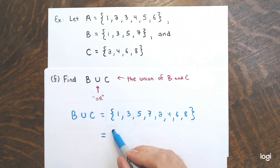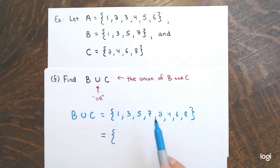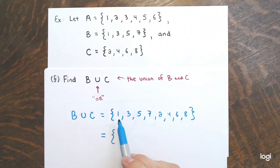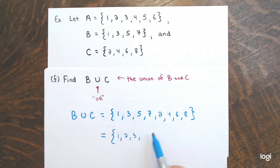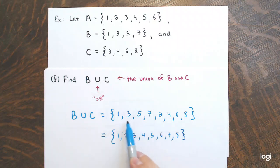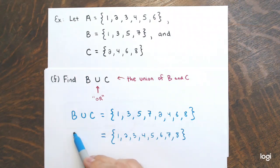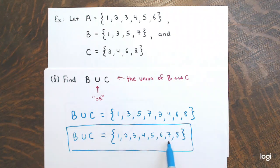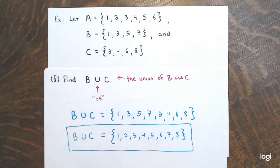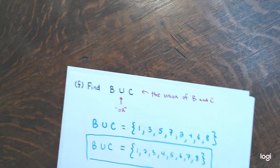Both orderings represent the same set. Many authors prefer to list numbers in numerical order. That was a few examples with finite sets. Now let's look at sets with infinitely many elements, which makes things a bit trickier. I'll introduce set builder notation, where you describe the set with a condition rather than listing all elements.